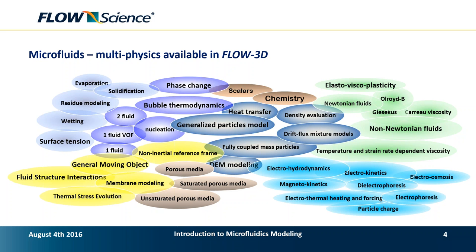This slide shows the main multiphysics areas readily available in Flow3D. On the bottom left in yellow, we have models relating to moving objects and fluid-structure interactions — rigid body motions, membranes, elastic deformation dynamics, and even thermal stress evolution. We also have physics relating to surface tension processes — wetting, free surfaces, and fluid-fluid interfacial forces — as well as thermodynamics, heat exchange, phase change, particle dynamics, DEM modeling through Flow Science Japan, chemistry, Newtonian and non-Newtonian rheology, viscoelastic behaviors, porous media models, and electro- and magnetohydrodynamics.